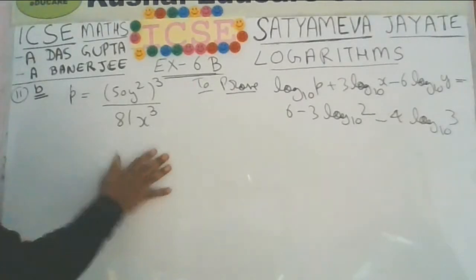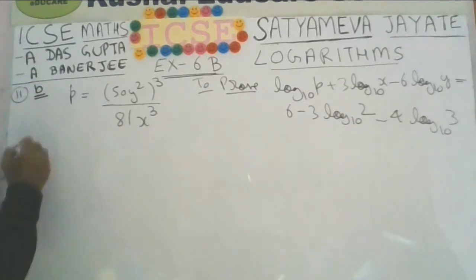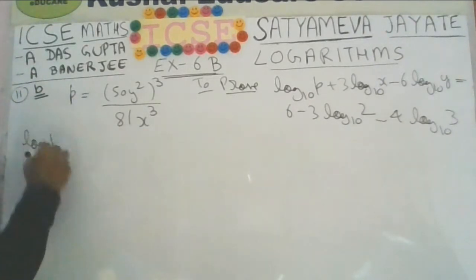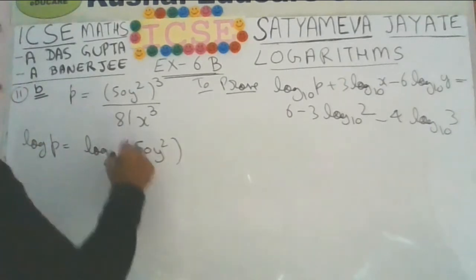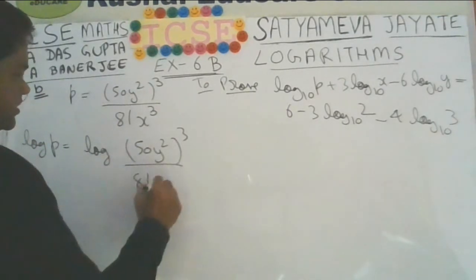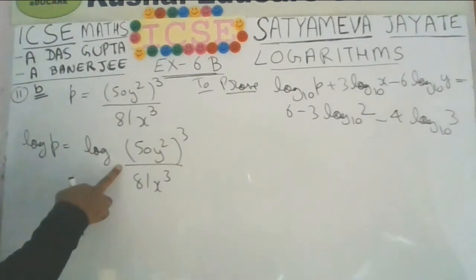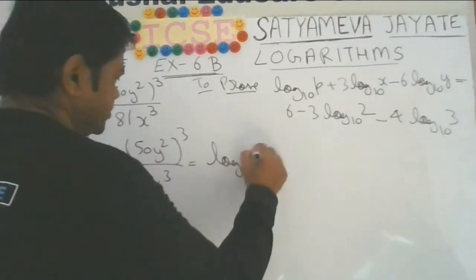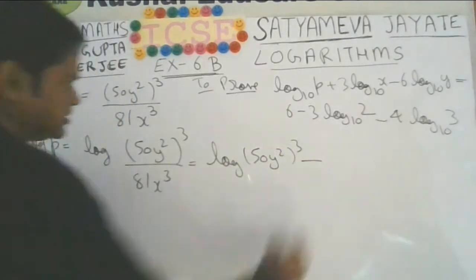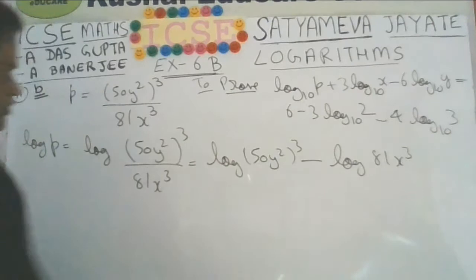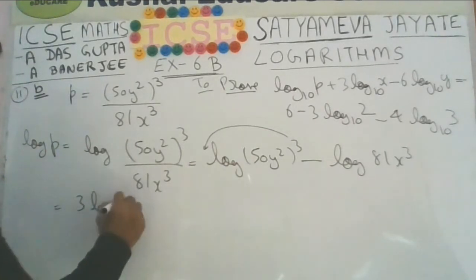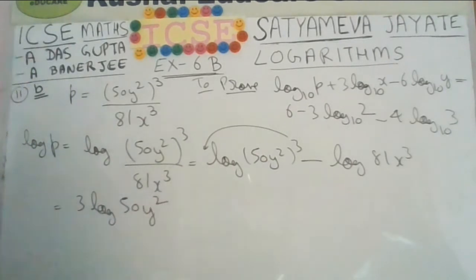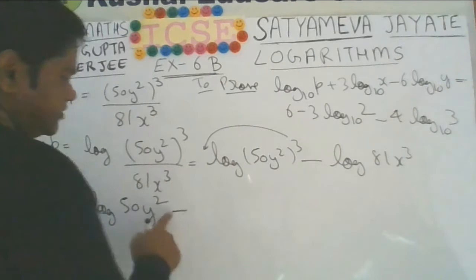Again we have to prove. Take log on both sides, so we get log of p equal to log of 50 times v squared times y squared to the power 3, divided by 81x cubed. Division is converted to subtraction. Simplifying, we write the 3 in front as a multiplier, so it will be 3 times log of 50 times y squared.